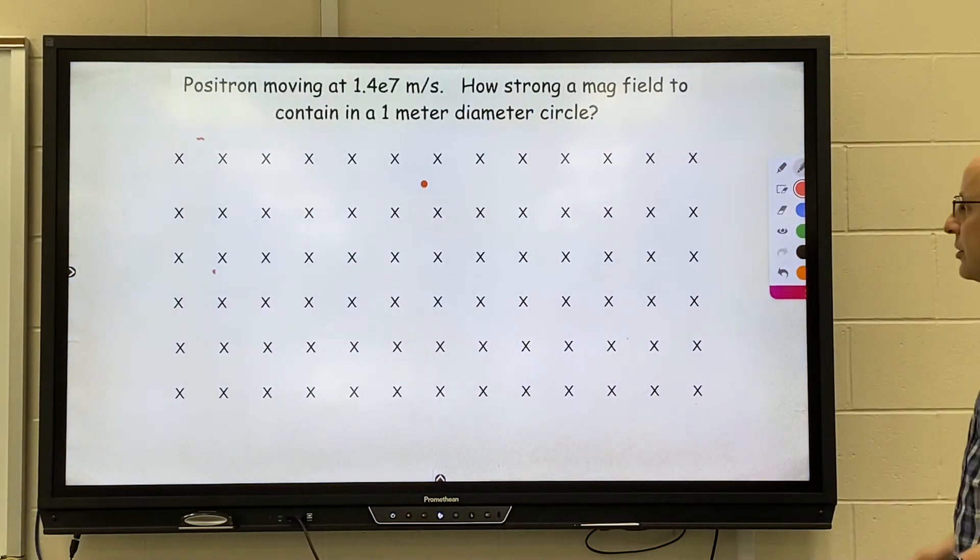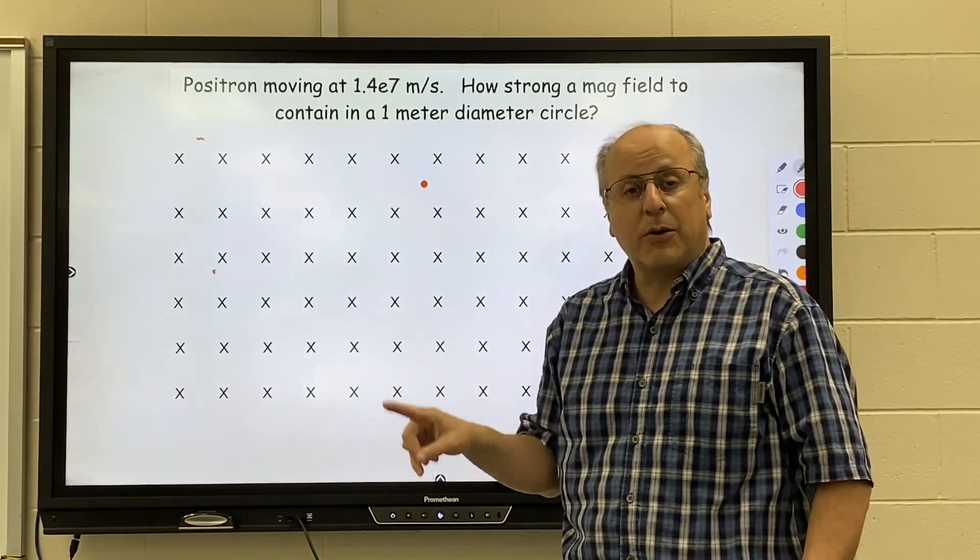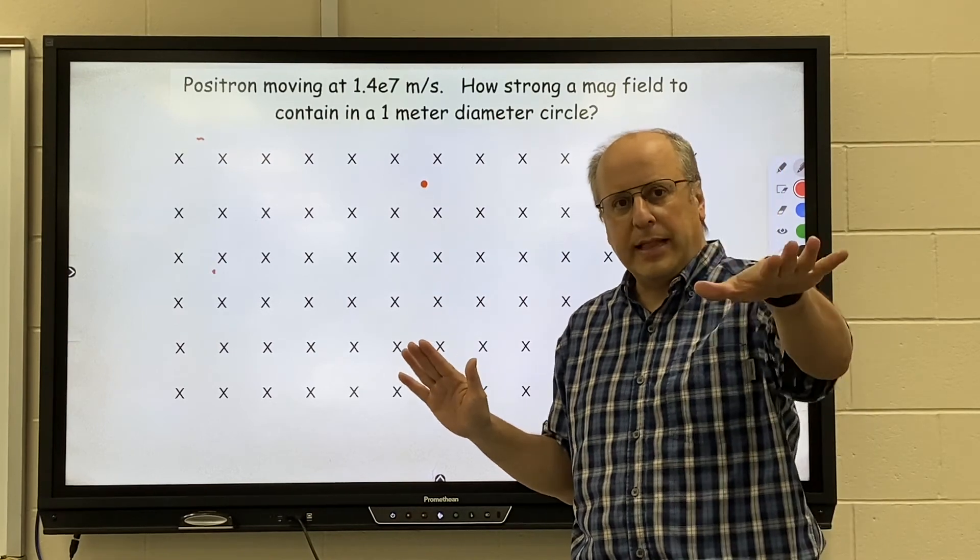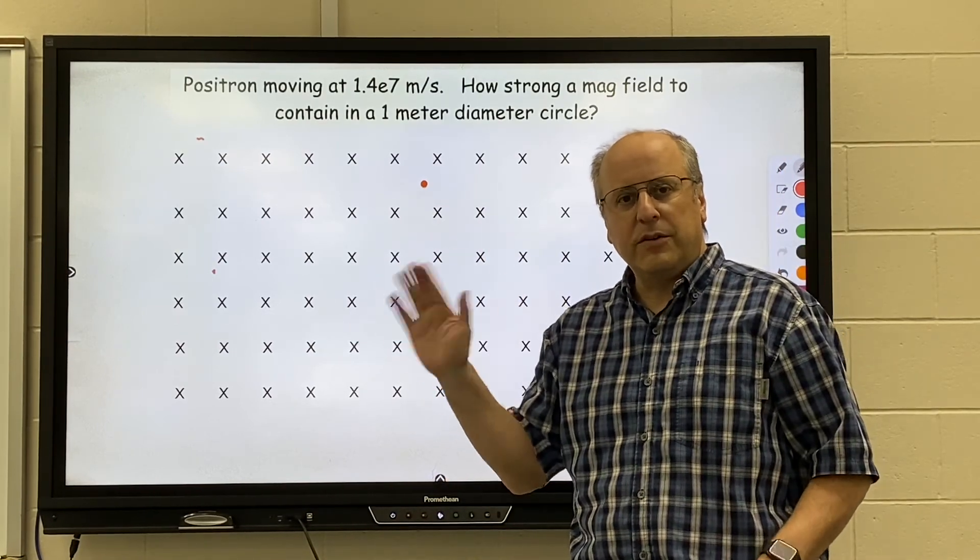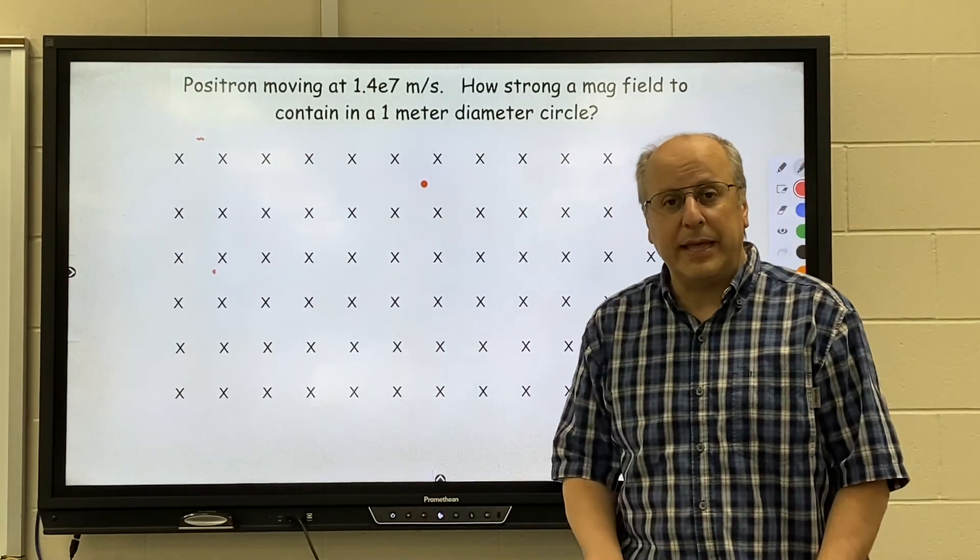Now when we're dealing with a positron and we're trying to figure out does it go in a clockwise or counterclockwise circle, that's where you've got to make sure for the electron, left hand, positron, right hand. Okay, and that is our first use of the magnetic field. All right, now let's go.